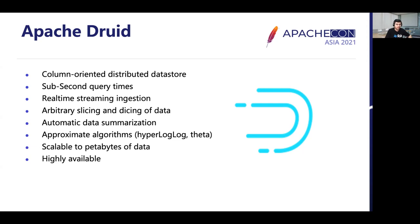Apache Druid is a column-oriented distributed data store. Data is stored in columnar format. Many data sets have large numbers of dimensions — hundreds or even thousands of columns — but most queries only need five to ten of them. The columnar format helps Druid scan only the required columns to provide fast query times. It also utilizes techniques like bitmap indexes for fast filtering, memory-mapped files for low-latency data scans from memory, and data summarization and compression to reduce overall data footprint.